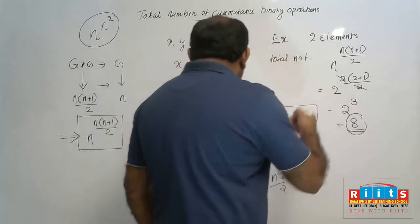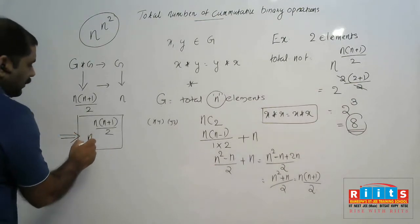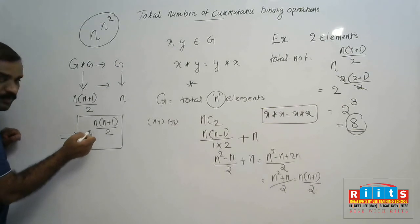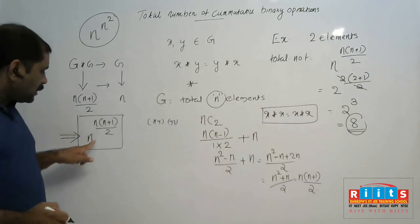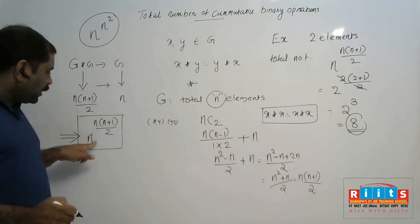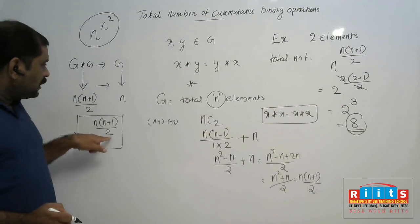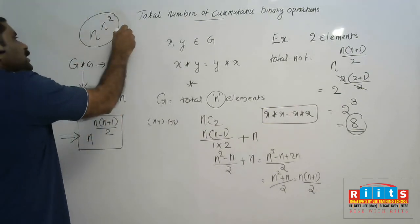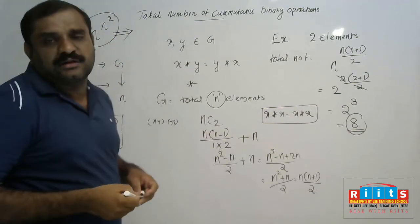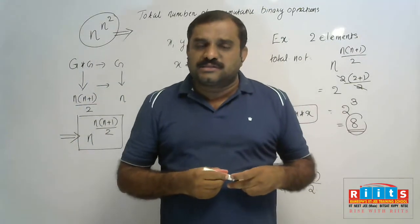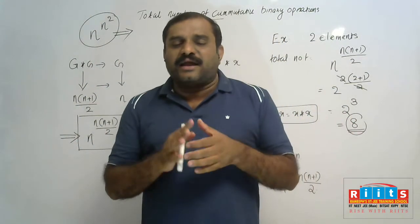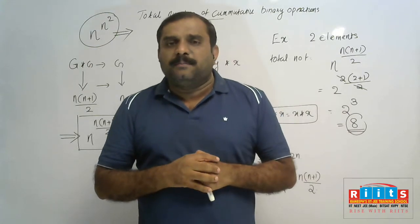To summarize: if a set has n elements, the total number of commutative binary operations is n raised to n(n+1)/2, and total number of binary operations is n raised to n². If you enjoyed this video, please like, share, and comment. Bye!